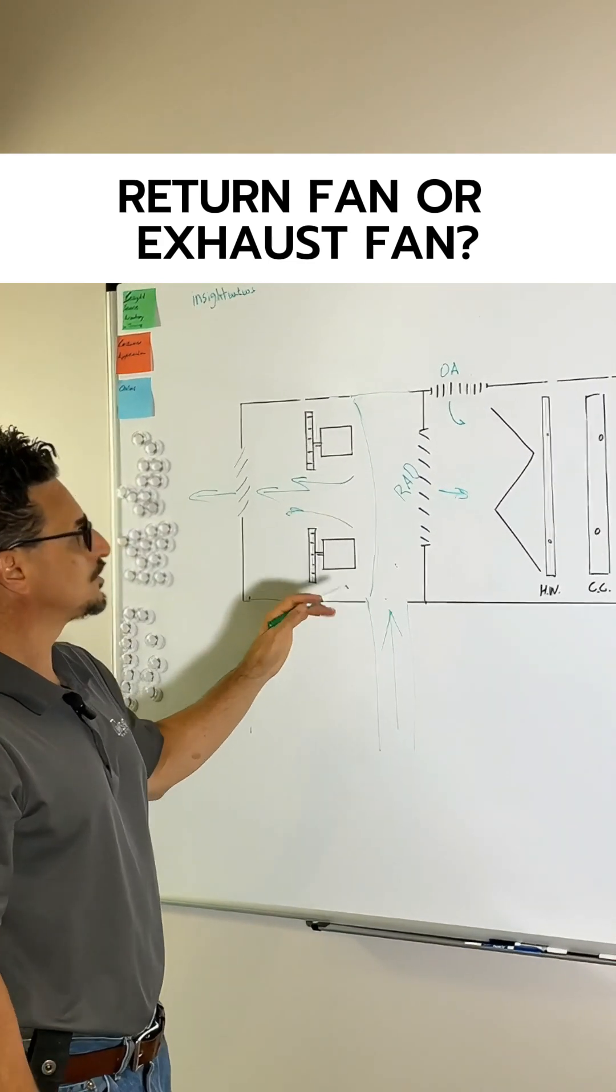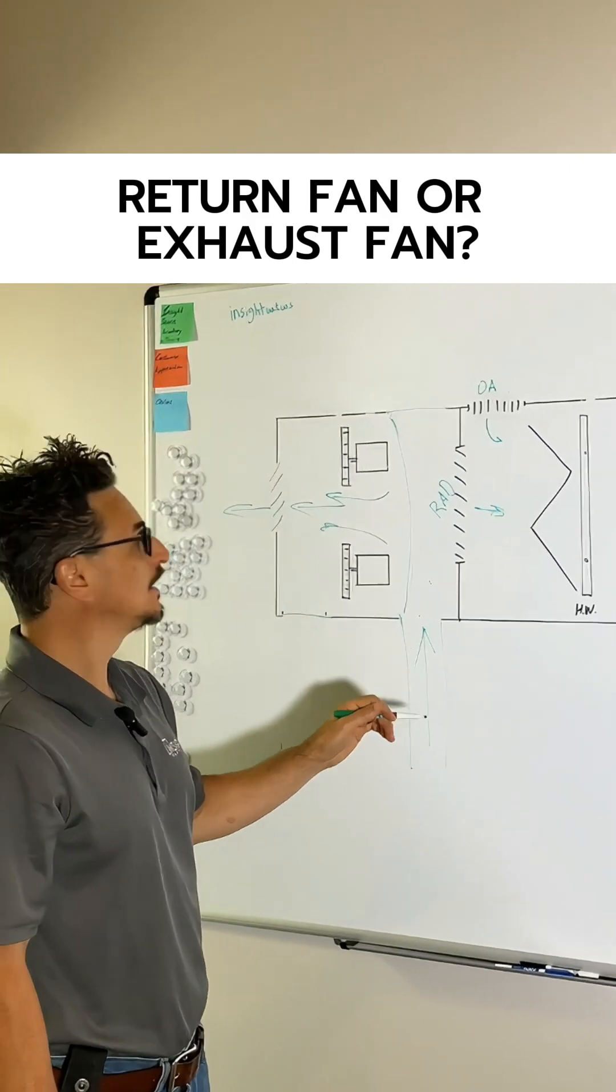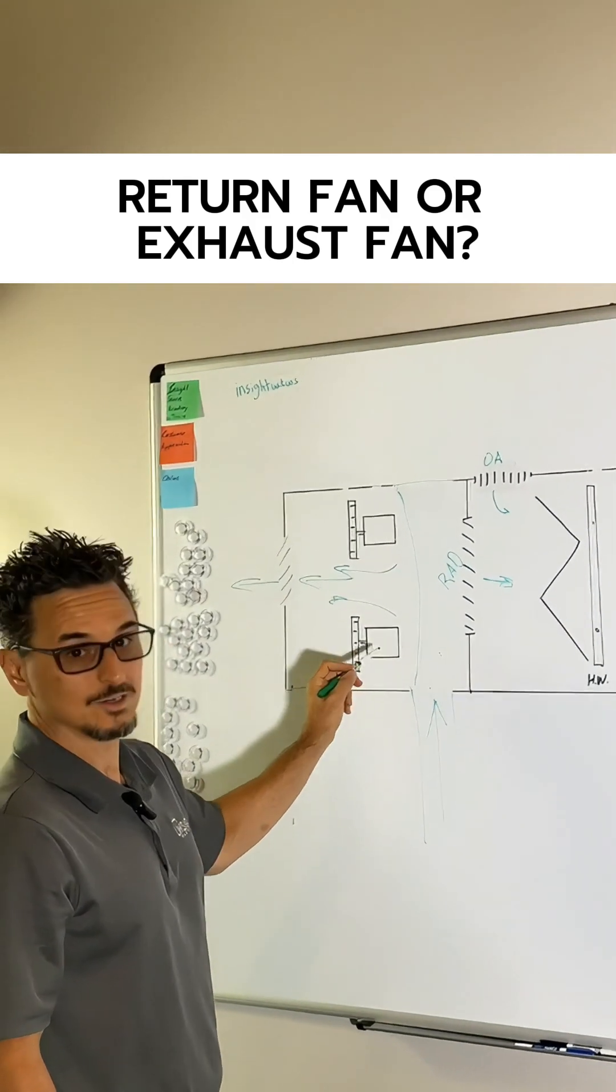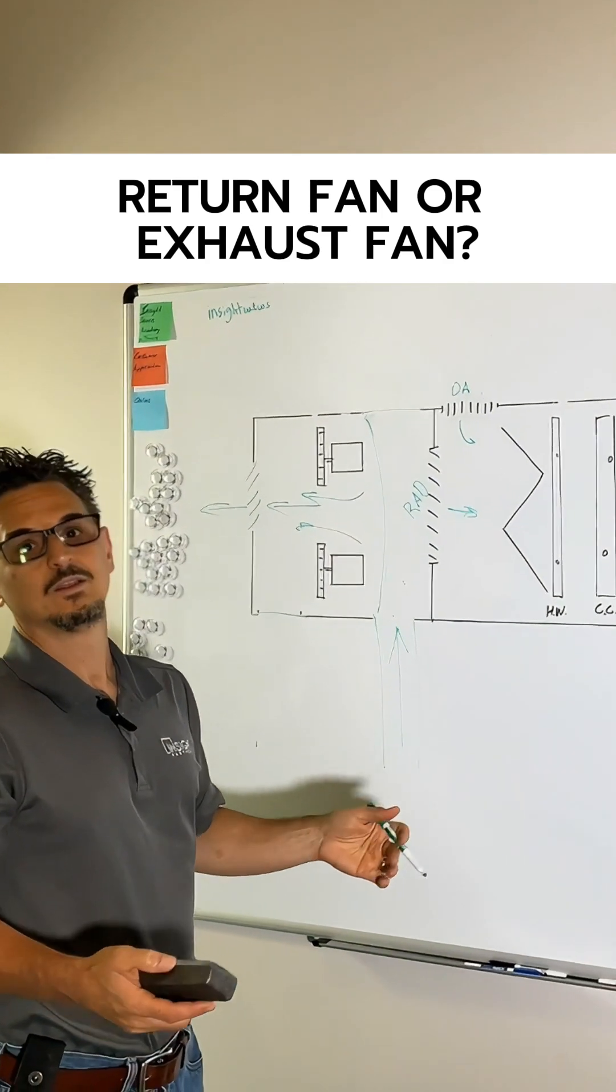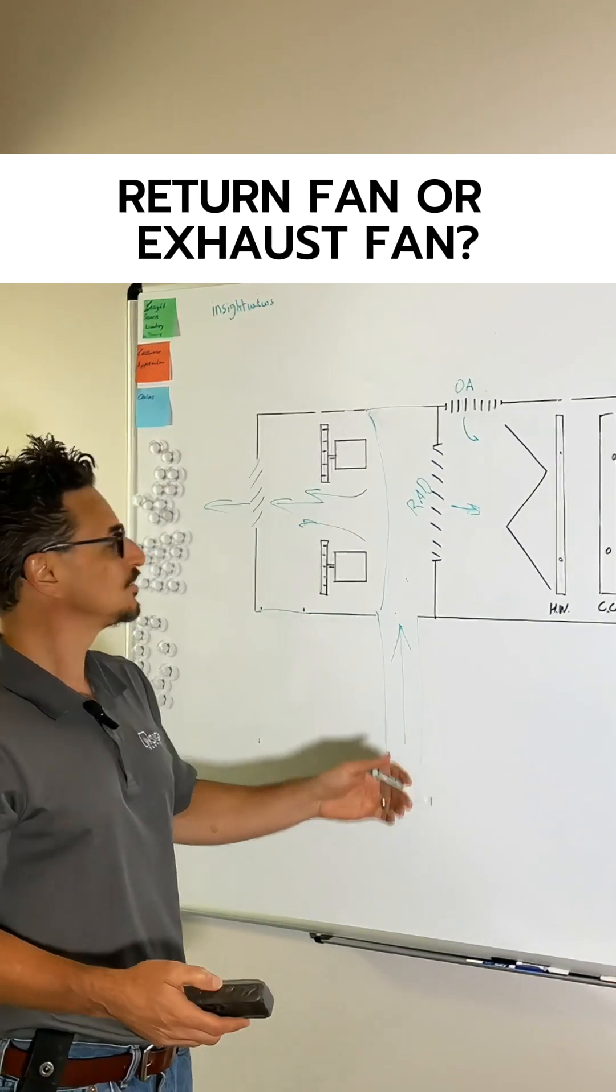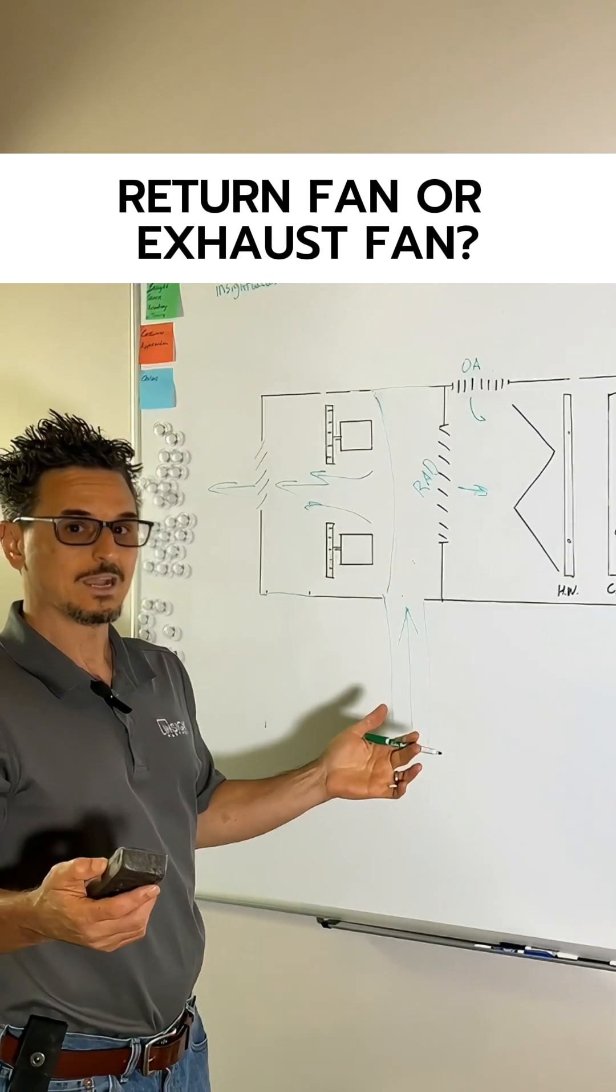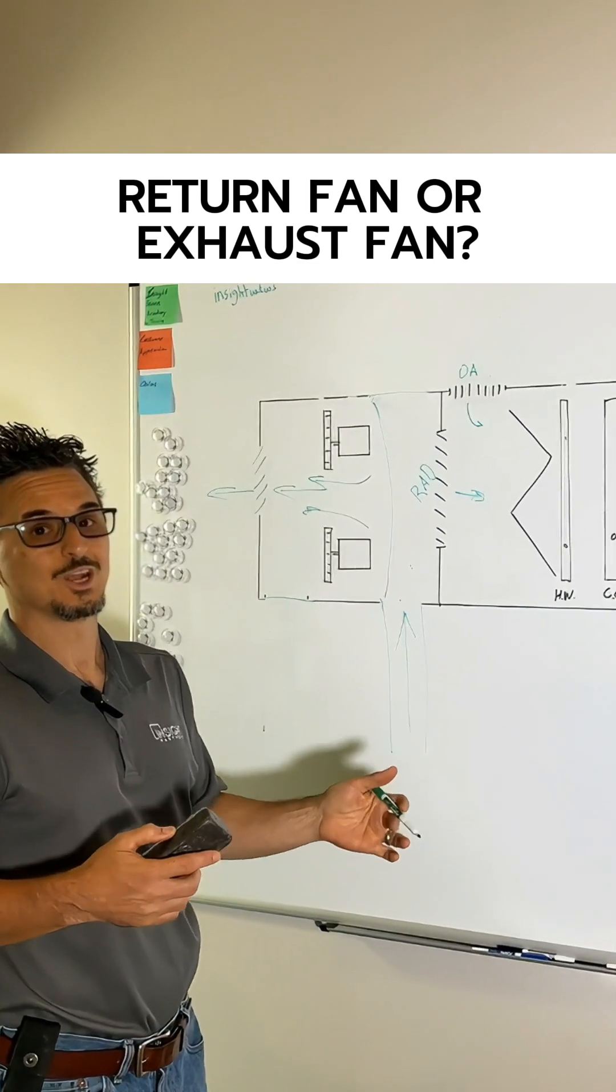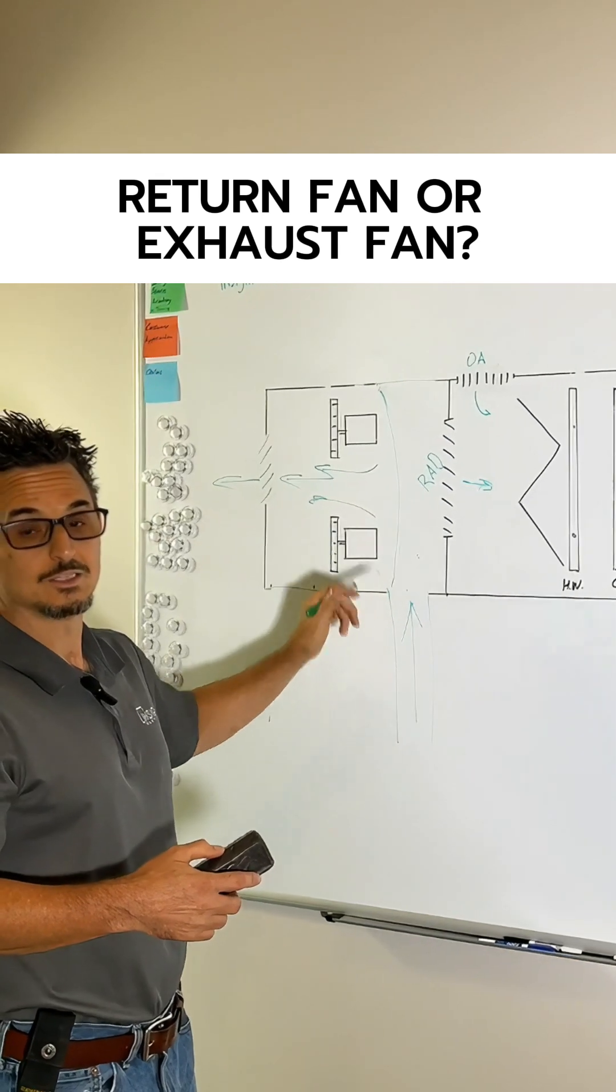So one of the challenges or one of the things to be concerned with is if you're going to do 100% economizing, make sure that these fans are designed for 100%. A lot of times when we're selecting package DX equipment, we might be selecting a 5,000 CFM unit with 20% outside air, right, and usually the exhaust fans are only sized to handle that full design outside air. So if you want 100% economizer scenario, make sure that in that scenario these fans would be sized for 5,000 CFM.